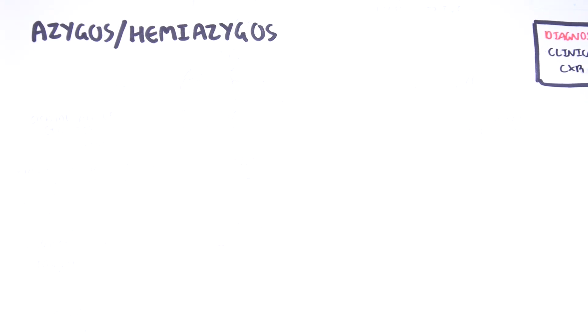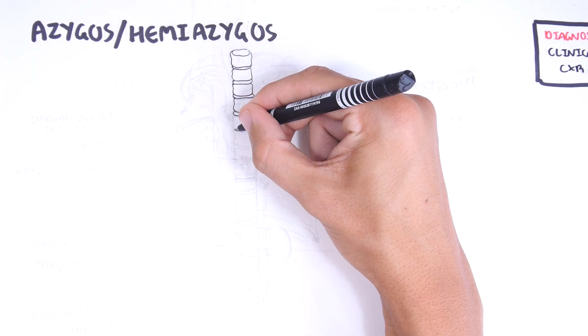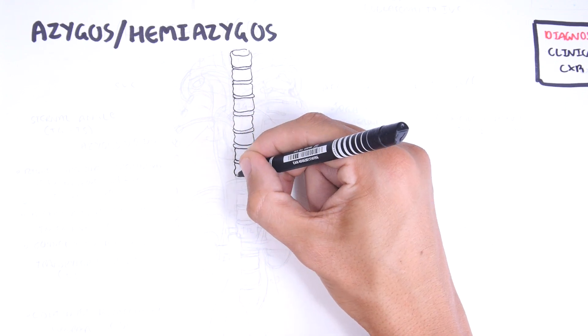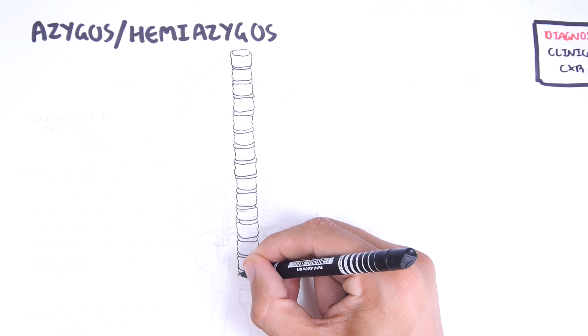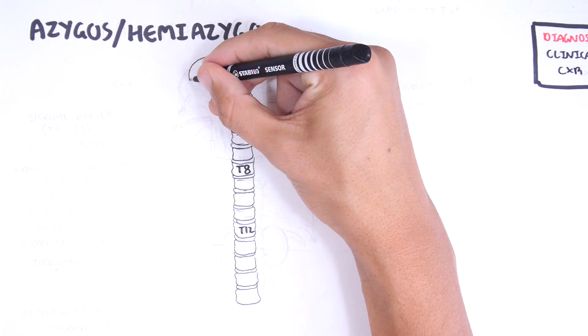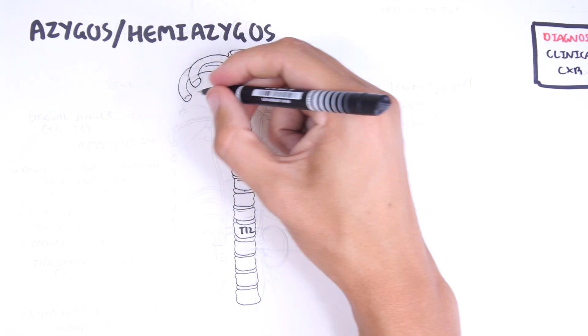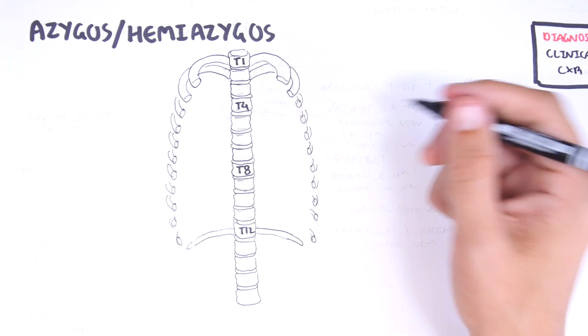The azygos vein forms the azygos-hemiazygos system. This system has two main functions. First, it provides an important collateral pathway in cases of inferior vena cava obstruction. Second, it drains venous blood from the thoracic wall and the upper lumbar regions.